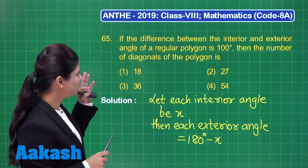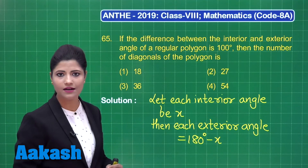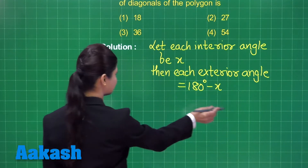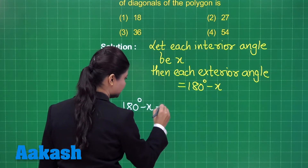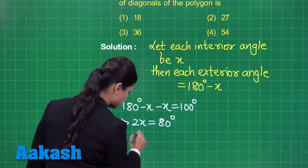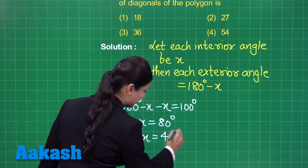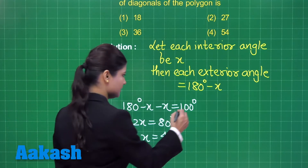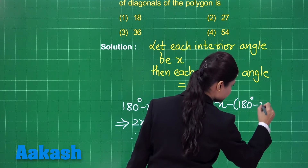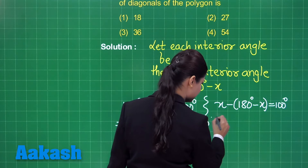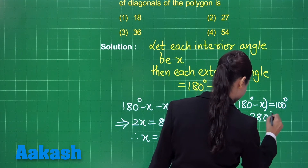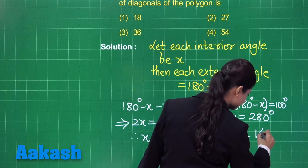We do not know the order of subtraction, so we consider both cases. First, taking exterior minus interior equal to 100 degrees: simplifying gives 2x = 80 degrees, so x = 40 degrees — the interior angle is 40 degrees. Second, taking interior minus exterior equal to 100 degrees: x minus (180 minus x) = 100 degrees, giving 2x = 280 degrees, so x = 140 degrees.